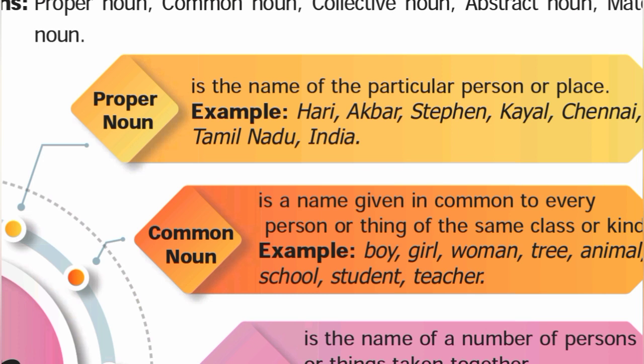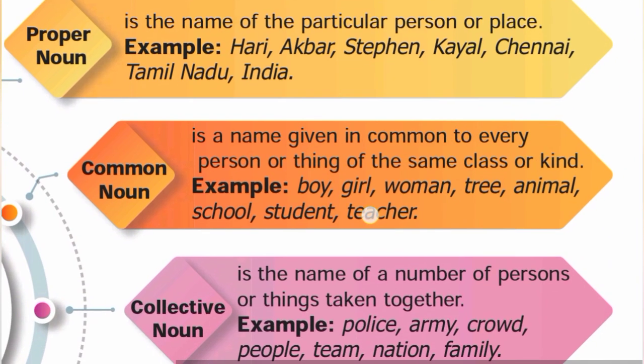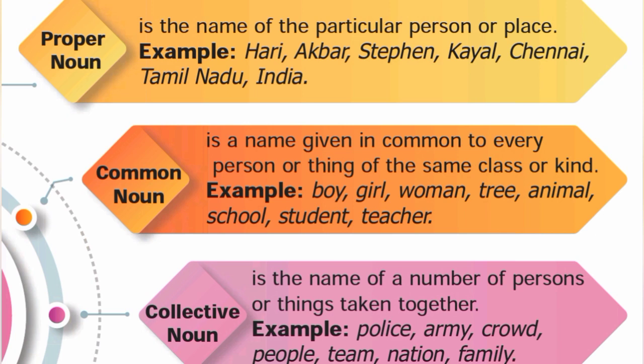Common noun is a name given in common to every person or thing of the same class or kind. For example, 'boy' and 'girl' are common nouns. Krishna, Ravi, and Bhaskar are proper nouns — specific names — whereas 'boy' or 'girl' is the common noun. Teacher, school, and student are also common nouns.